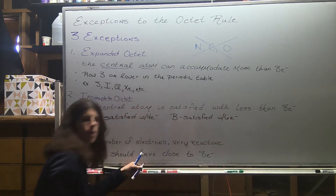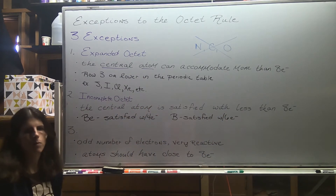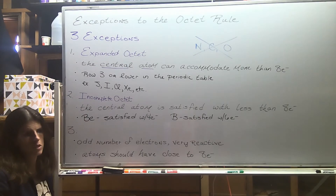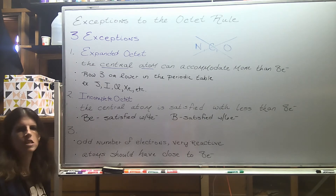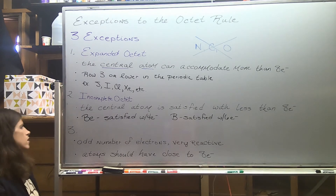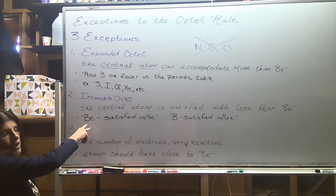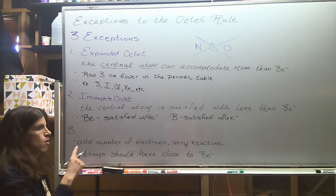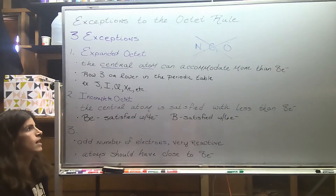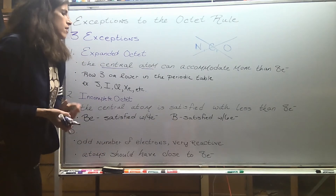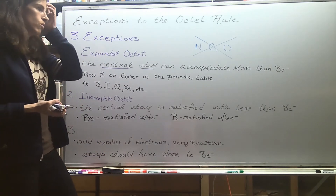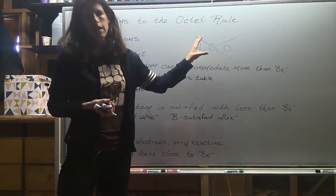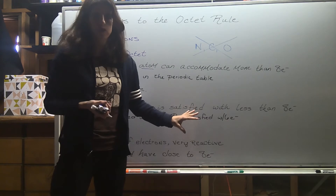A way to remember this: looking at your periodic table, hydrogen and helium are happy with two. Lithium doesn't do covalent bonds, but it's also very small and at the beginning, so it's satisfied at four. Boron is satisfied with six, and at that point you return to carbon, which always does a full octet of eight.